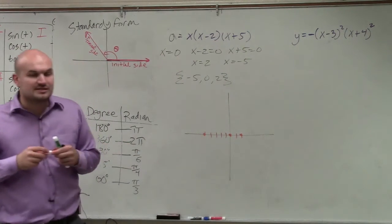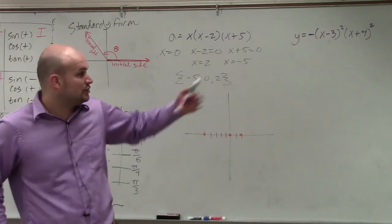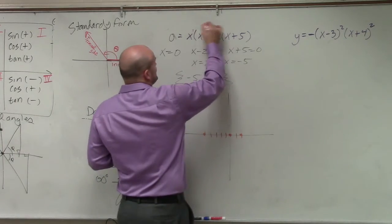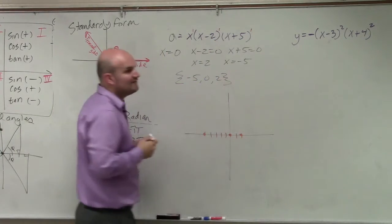Now, to determine what the graph is, if these zeros are going to be crossing or bouncing, we need to look at the multiplicity. Again, remember the multiplicity is the power of each one of our factors.